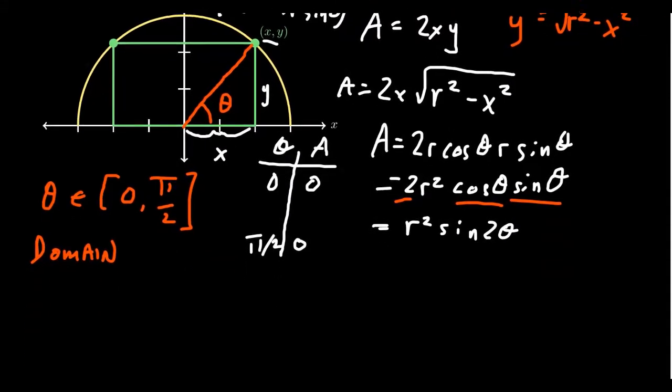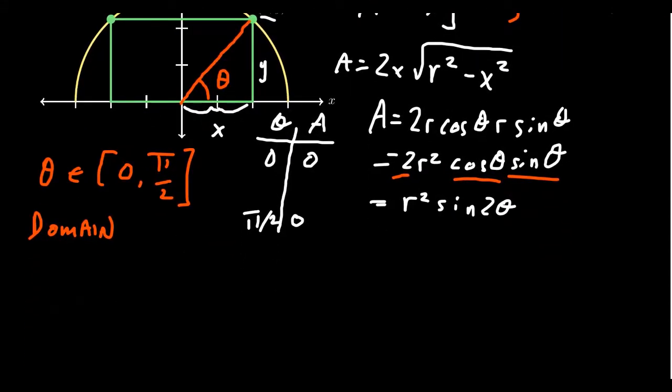And that's going to be a much cleaner derivative. Because after all, r² is just a constant here. It doesn't change. And therefore, A' is going to equal 2r² cos(2θ). What do you know? That's great.